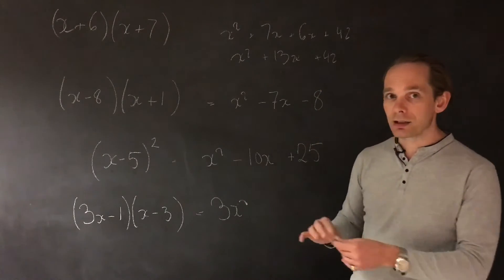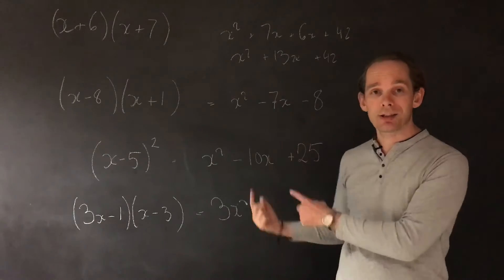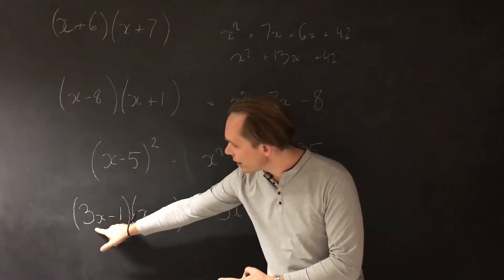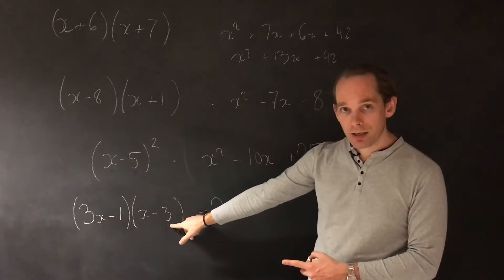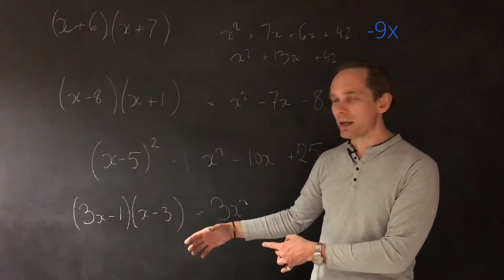Now the outside term and the inside term, I'm going to do these and sort of hold them in my head and just get one answer. The outside term, 3x times minus 3, always check that sign, is minus 9x.